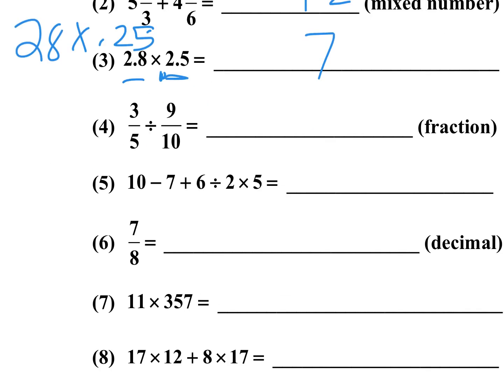Number four: three-fifths divided by nine-tenths, and they want the answer as a fraction. I'm going to flip this over to 10 over 9 — when you divide by a fraction, you multiply by the reciprocal. So 5 goes into 10 two times; 2 times 3 is 6; 6 over 9 reduces to two-thirds. Always reduce. That's the answer for number four.